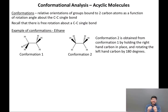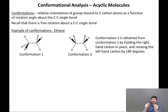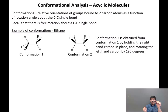What I have drawn on the screen are the two extreme conformations of ethane. Conformation one has the left-hand carbon with a hydrogen pointing straight up, and then of the two pointing down, one is pointing towards you and one is pointing away from you. On the right-hand carbon, there is a hydrogen pointing straight down, one pointing up and towards you, and one pointing away from you. The other extreme is conformation two, which I could obtain from conformation one by holding the right-hand carbon in place and rotating the left-hand carbon by 180 degrees.